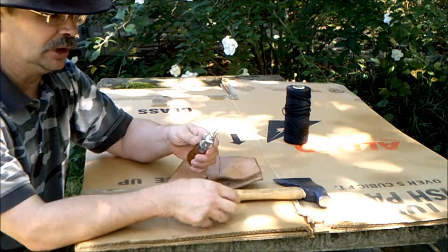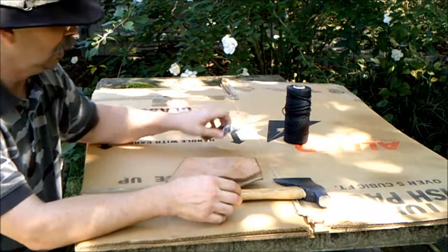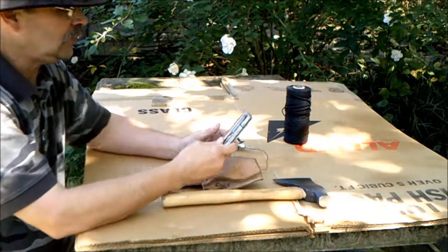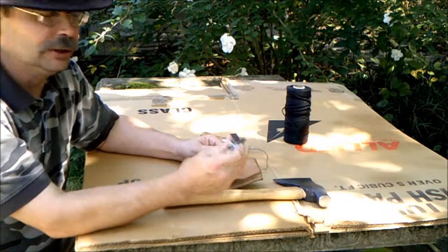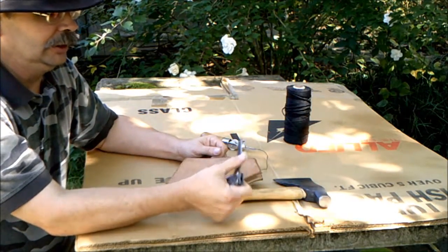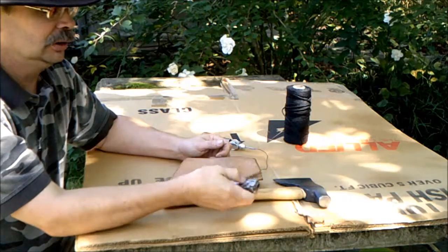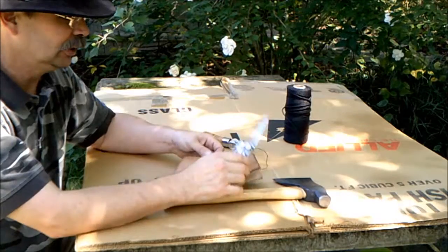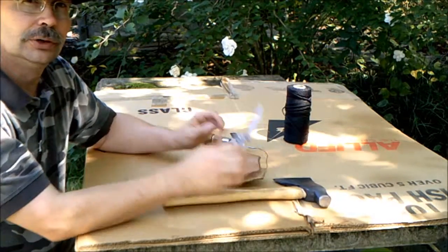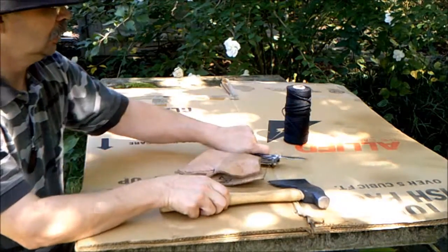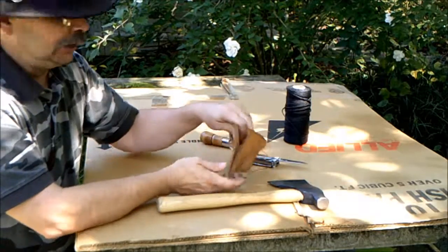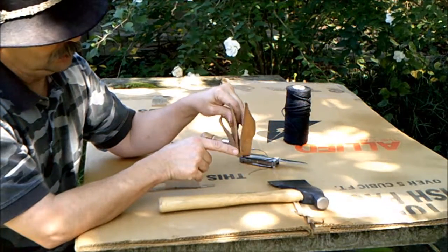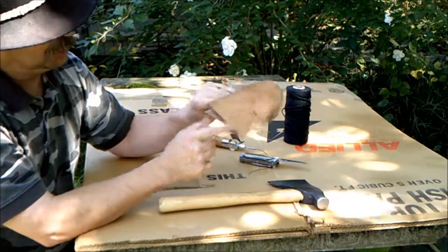I've also got my lock stitcher and my Leatherman, which has a very sharp straight edge knife for cutting the leather with. What I've already done is I've separated the back of it. You can see where my stitching used to be.